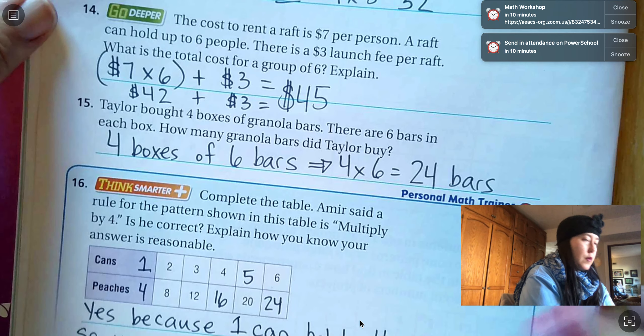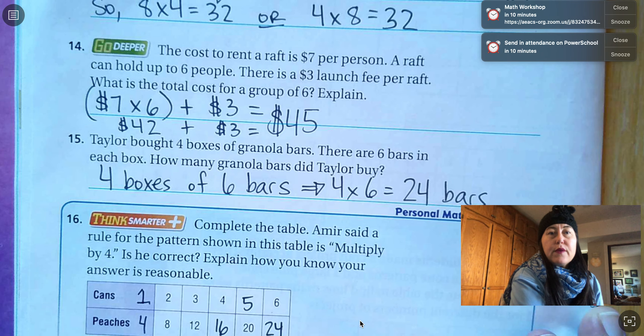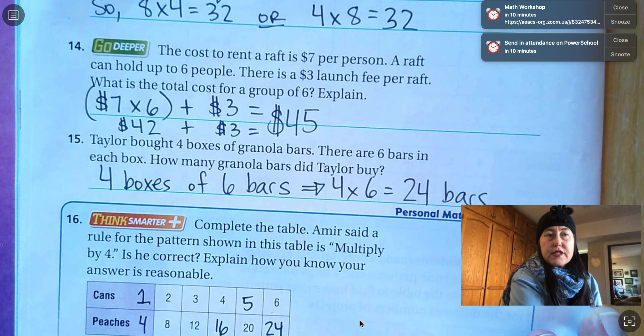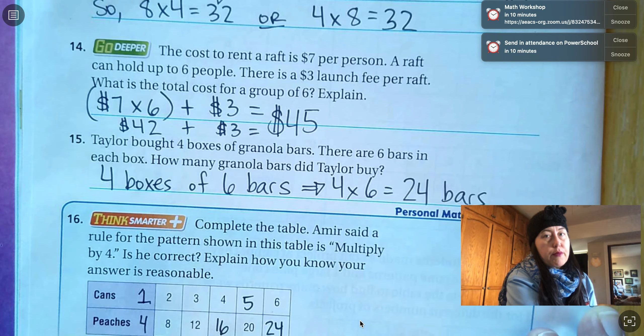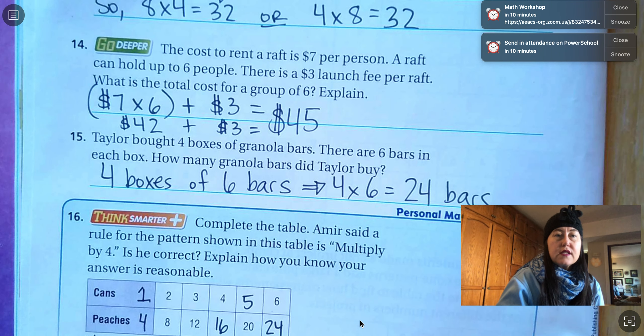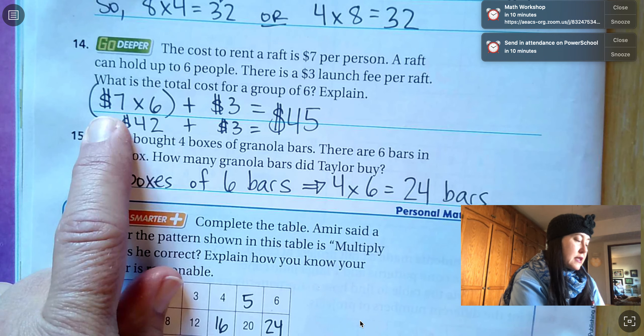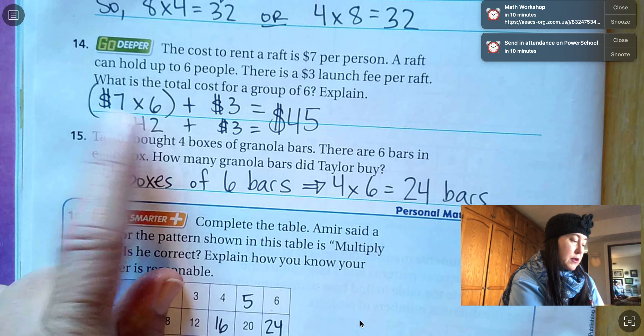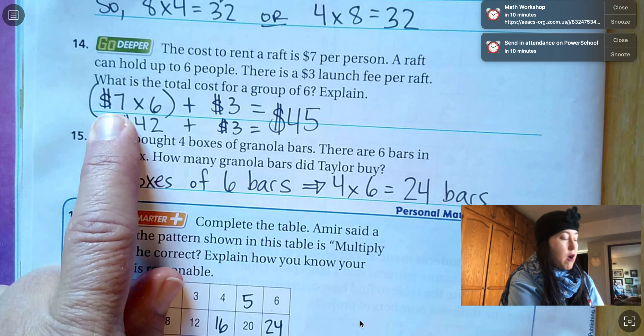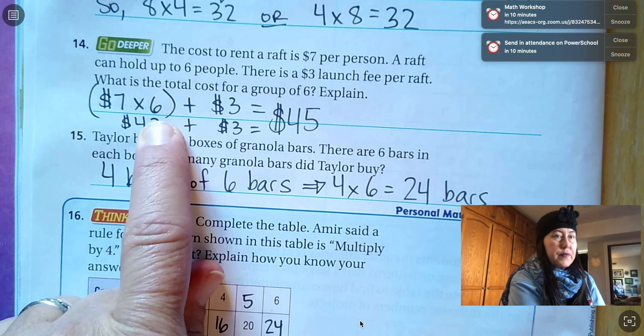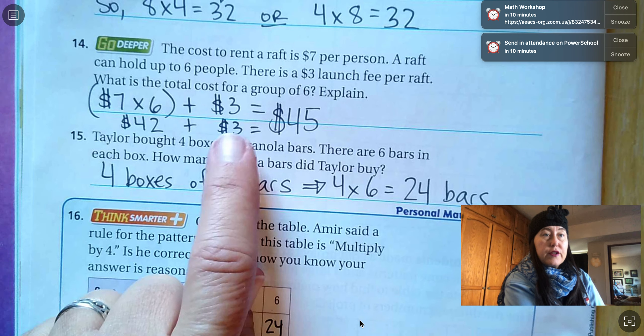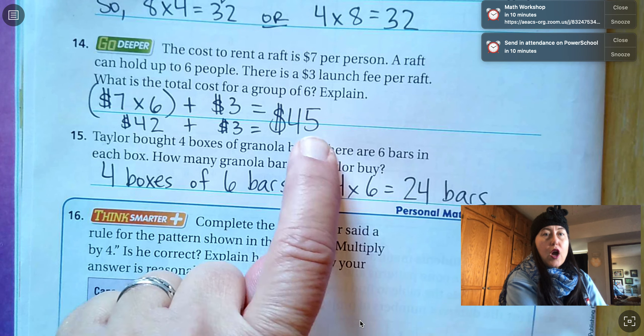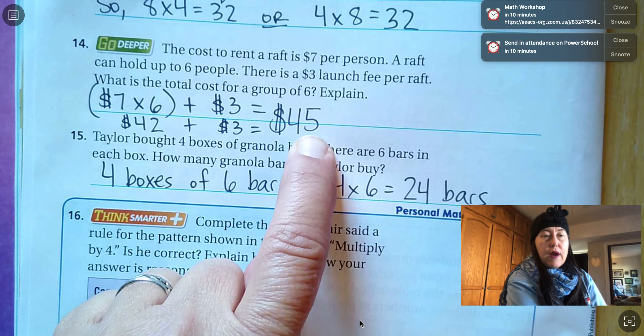Number 14, we're going to go a little deeper. The cost to rent a raft is seven dollars per person. A raft can hold up to six people. There is a three dollar launch fee per raft, so not per person. What is the total cost for a group of six? So seven dollars times the six people. Seven dollars per person, that's our one unit cost times the six people. We have six units. So that is seven times six is forty-two. But we also have to add that three dollar launch fee. So the total for all six people to go in the raft is forty-five dollars.